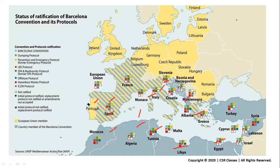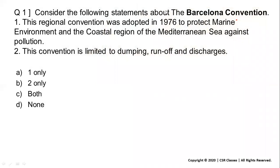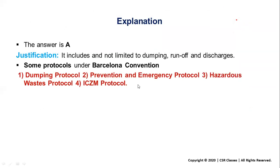This topic is not covered in most current affairs magazines, but convention questions are coming frequently now. Here is a sample question: 'Consider the following statements about the Barcelona Convention: (1) This regional convention was adopted in 1976 to protect the marine environment and coastal region of the Mediterranean Sea against pollution — this is correct. (2) This convention is limited to dumping, runoff, and discharges — this is incorrect, because it covers dumping, runoff, discharge, oil spills, hazardous substances, and all kinds of pollution. Therefore, only statement one is correct.